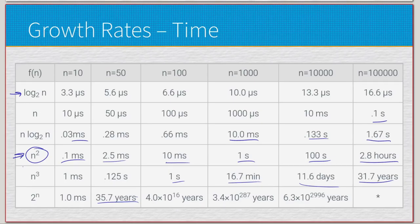In summary, the most realistic targets are linear n and linearithmic n*log(n). Logarithmic log(n) is incredible if achievable. This has been a basic introduction to algorithms — what they are, a simple example, and an analysis showing that not all algorithms are equal. The next video will go into more detailed analysis of time complexity.